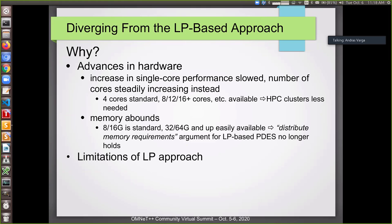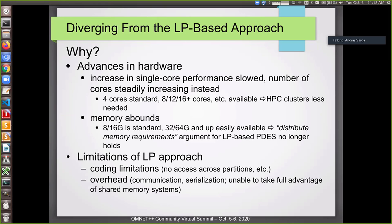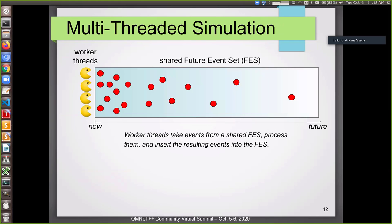And earlier, there was an argument for this logical process approach that you can distribute the memory requirements because every process only has to keep one part of the memory, one part of the model in memory. And this no longer applies because you can buy as much memory as you want. So it doesn't make sense to do this. The other thing is the limitations of this approach. There's this coding limitation that you can't really access modules across the other partitions. There's overhead, communication overhead, serialization overhead. And because of this message passing thing, we can't fully take advantage of the shared memory system that computers have nowadays. And there's inconvenience. We have to do MPI run and manage multiple processes. So yeah, it's inconvenient.